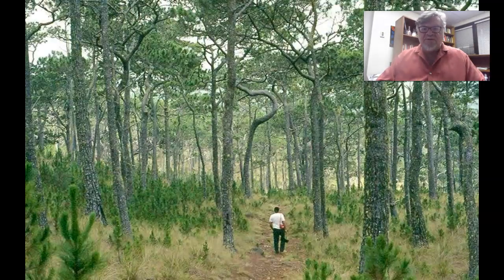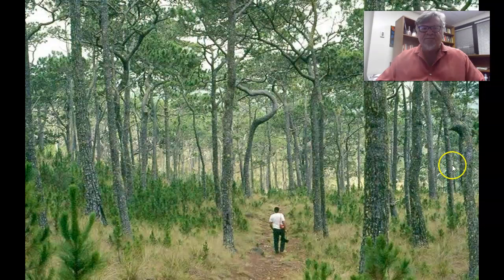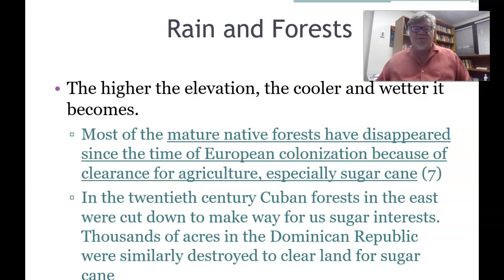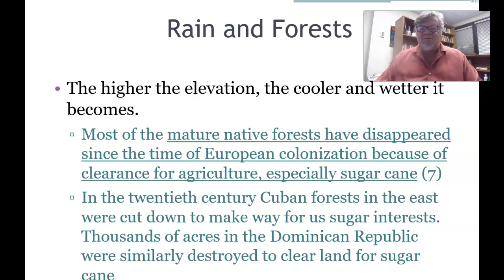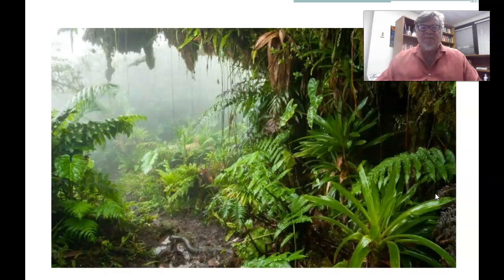The higher the elevation, the cooler and wetter it becomes. Most of the mature native forests have disappeared since European colonization due to clearance for agriculture, especially sugar cane. In the 20th century, Cuban forests in the east were cut down to make way for U.S. sugar interests, and thousands of acres of the Dominican Republic were similarly destroyed to clear land for sugar cane.